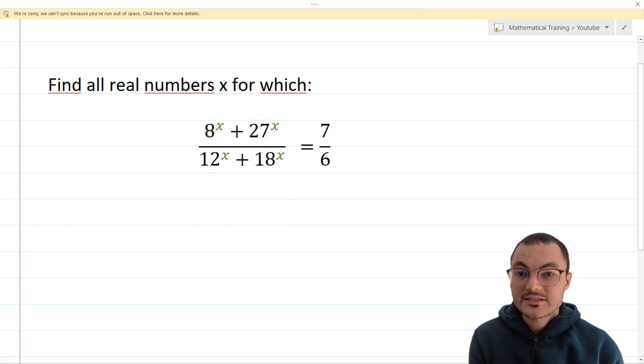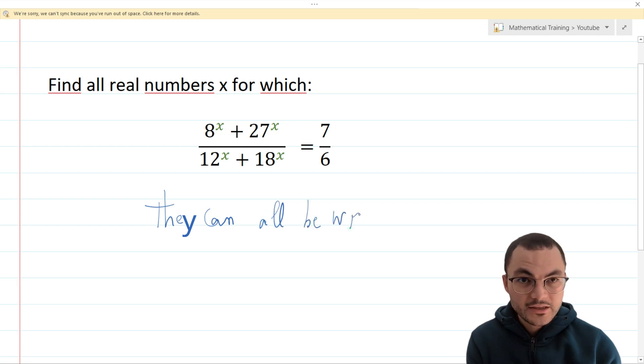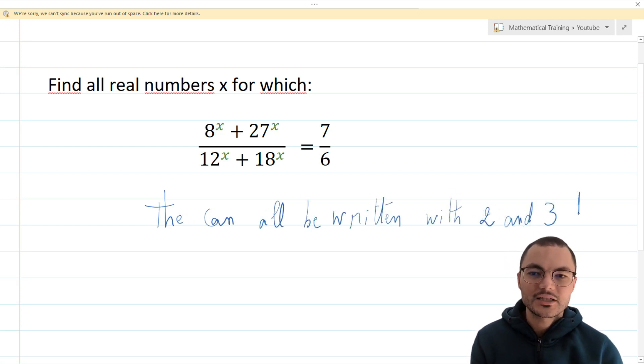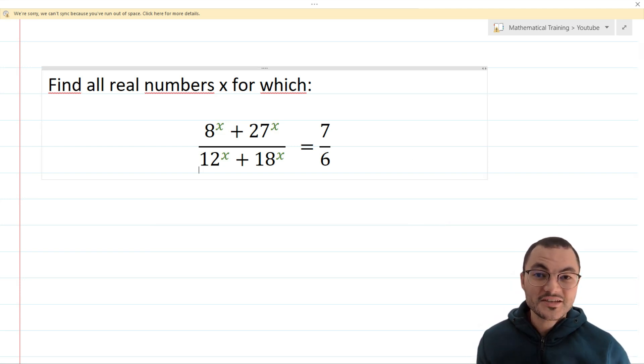First let's take a closer look at the numbers 8, 27, 12 and 18. Are they random or do they share a common trait? As it turns out all these numbers are multiples of 2 and 3.